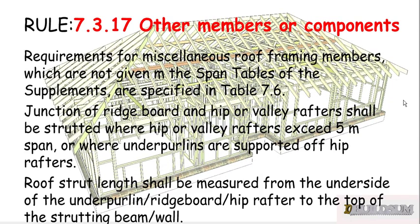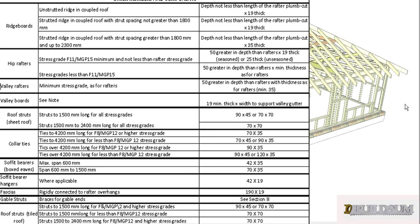We've already looked at rule 7.3.17 for other members and components, which basically tells us we need to use table 7.6. So in table 7.6 we can look at hip rafters and we can see it's broken up into two areas — we have stress grades F11/MGP15 minimum, and we have stress grades less than F11/MGP15, which is what we are because we're using MGP10. So we use this line here and it says that our hip rafter needs to be 50mm greater in depth than the rafters.